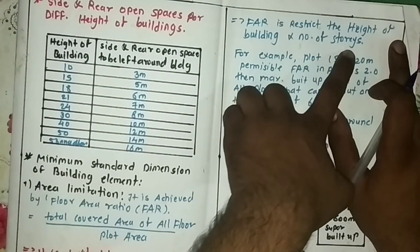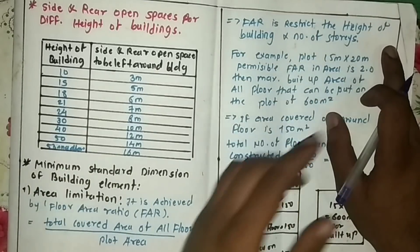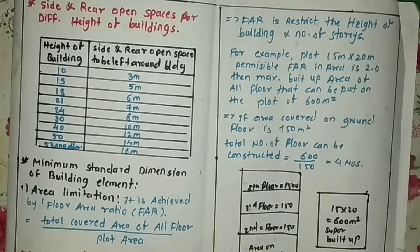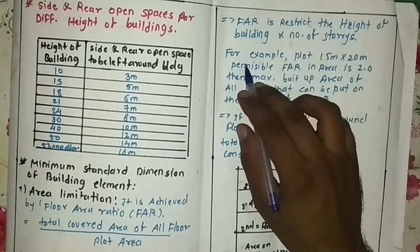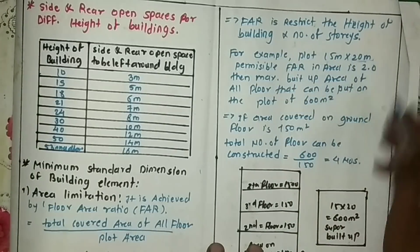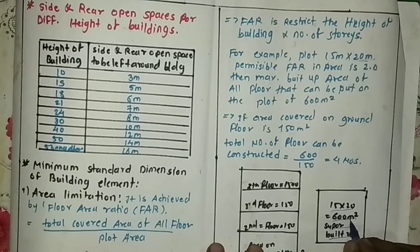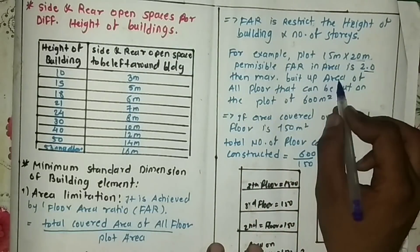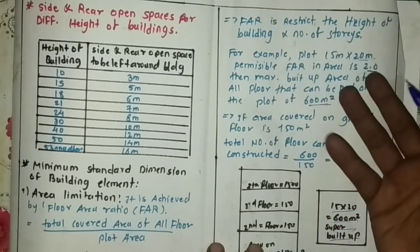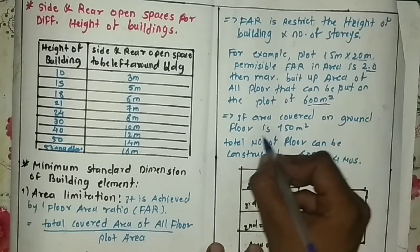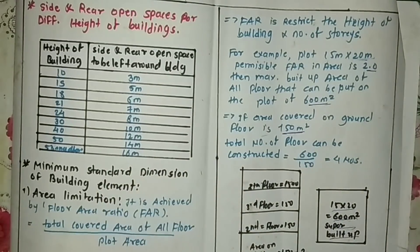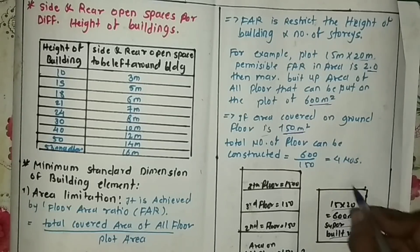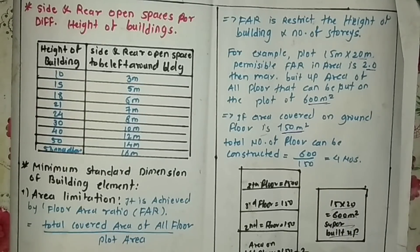I will explain how FAR works to restrict building height and number of stories. For example, take a plot area of 15 by 20 meters, giving a total built-up area of 600 square meters. If FAR in the area is 2, then the maximum total built-up area of all floors is 600 square meters. If the ground floor covered area is 150 square meters, then total covered area equals 150 times number of floors.